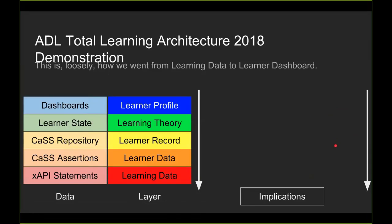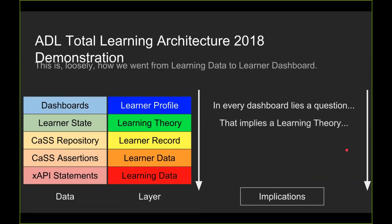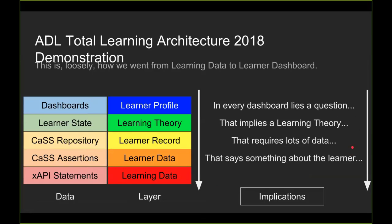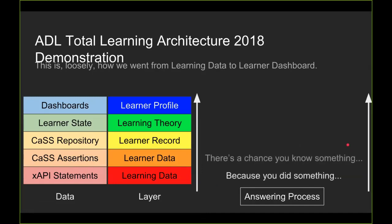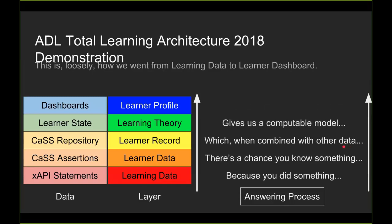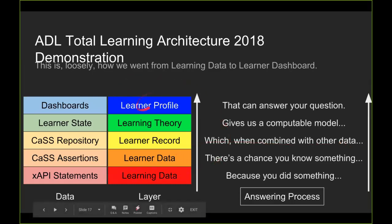The implications are that in every dashboard there's a bunch of questions, those questions imply learning theories, those learning theories require data to compute, and the data needs to say something about the learner based on things they did. To put it concretely: because you did something — that's learning data; there's a chance you know something — that's learner data; which combined with other data gives us a computable model to answer questions. Those are the conceptual frameworks that exist between the learning data and the learner profile.